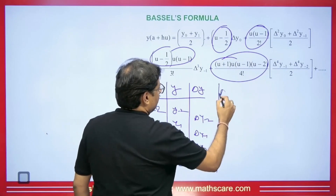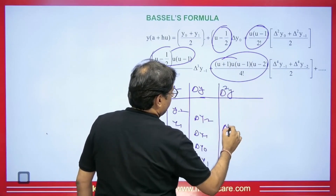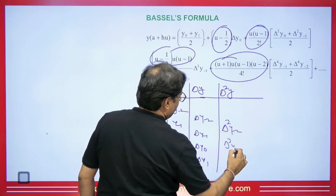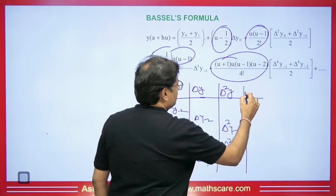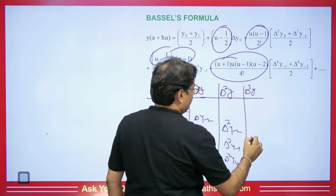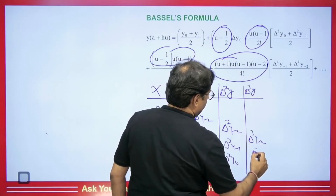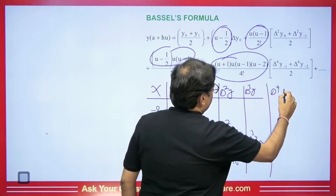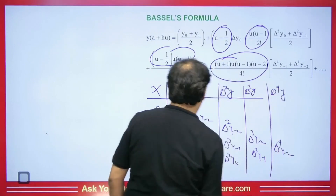Moving ahead, we will get the value of del squared Y minus 2, del squared Y minus 1, and del squared Y0. In the same way we will have del cubed Y minus 2 and del cubed Y minus 1. Then the value of del⁴Y which we get is del⁴Y minus 2.